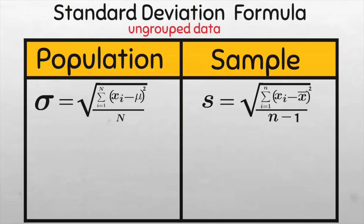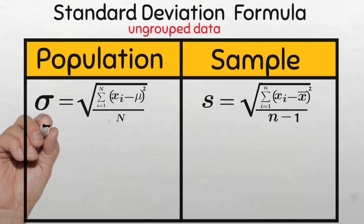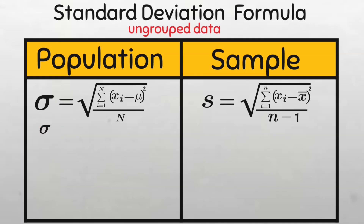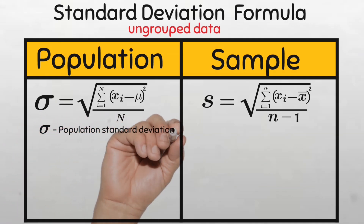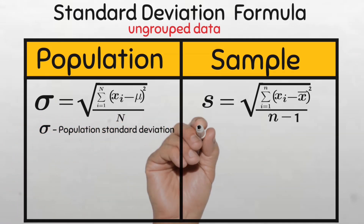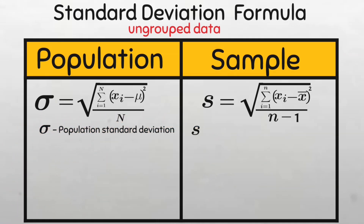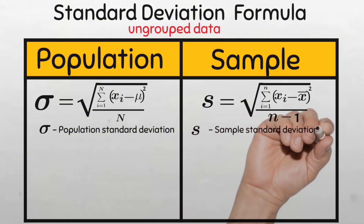I'm sure by now you must have spotted a lot of differences. Lowercase sigma represents the population standard deviation, while the Latin letter s represents the sample standard deviation.